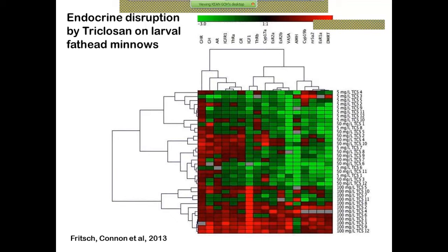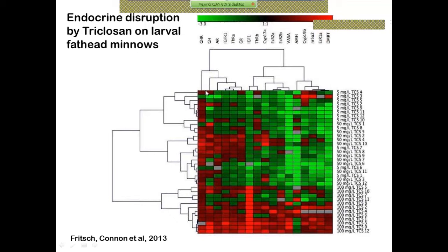Erica Fritsch was a graduate student at UC Davis, now completing a post-doc. She's been working on triclosan, which is an antibacterial agent present in many things we use such as hand soaps. This is an example of how a suite of genes shown on this graph can differentiate between different concentrations of triclosan. What you're seeing in this red-green box is that every column is a particular gene and every row is a particular fish.